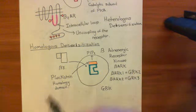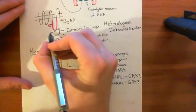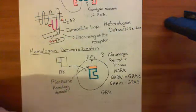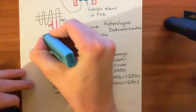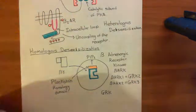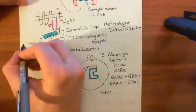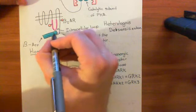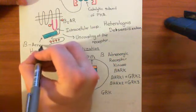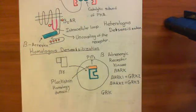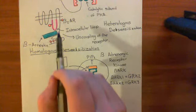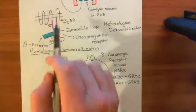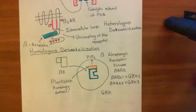What will these phosphate groups cause? They will cause the association of a new protein that will come and bind here. This rectangle, which I'll draw in blue, represents beta-arrestin, a protein known as beta-arrestin. This protein comes and associates in the gap nearby the intracellular loop, and it serves to uncouple the beta-2 adrenergic receptor from the heterotrimeric G protein, stopping the receptor from interacting with the heterotrimeric GS G protein.